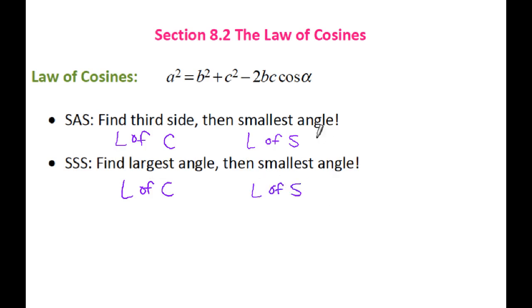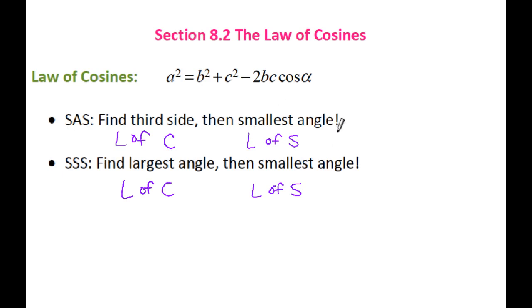For law of cosines, you do have to go in a very specific order in terms of finding your angle measurements, especially if you're using law of sines afterwards, because with law of sines when you find an angle measurement, there can be two solutions. So when you find the smallest angle using law of sines before you find the middle angle, that guarantees the smallest angle is going to stay acute, and you don't have to worry about finding the second angle measurement.